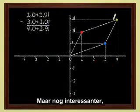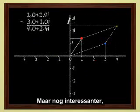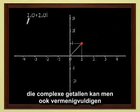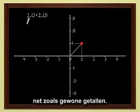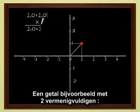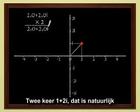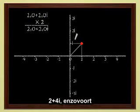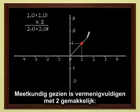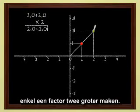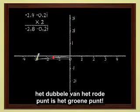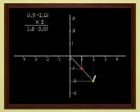Much more interestingly, these complex numbers can also be multiplied, just like real numbers. Let's see. We know how to multiply a complex number by 2, for instance. 2 times 1 plus 2i gives 2 plus 4i. Geometrically, multiplying by 2 is easy. It's just scaling up by a factor of 2. If we double the red point, we get the green point.